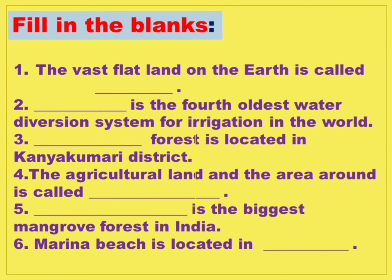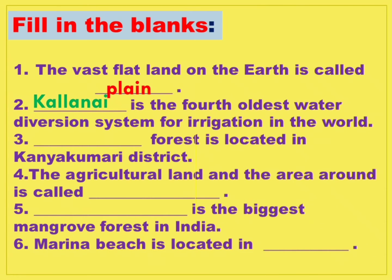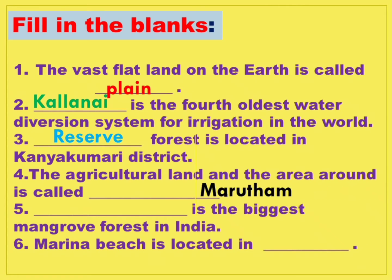The next one is filling the blanks. The vast flatland on the earth is called Plain. Kallanai is the fourth oldest water diversion system for irrigation in the world. Reserve Forest is located in the Kanyakumari district. The agricultural land and the area around us is called Marudam.